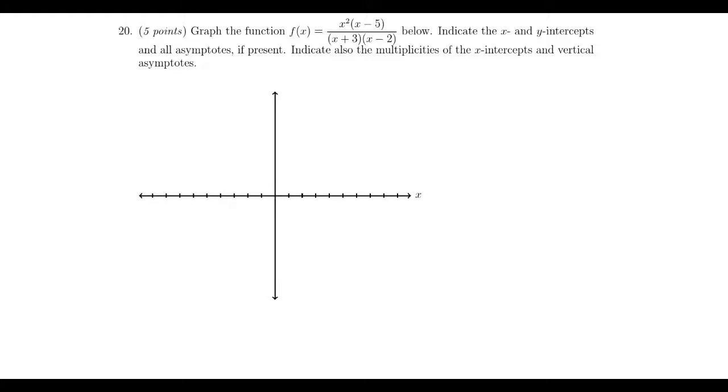In this video, we provide the solution to question number 20 from the practice final exam for math 1050. We have to graph the rational function f(x) equals x squared times x minus 5 over x plus 3 times x minus 2. We have to also make sure we label all the intercepts and asymptotes with their multiplicities.